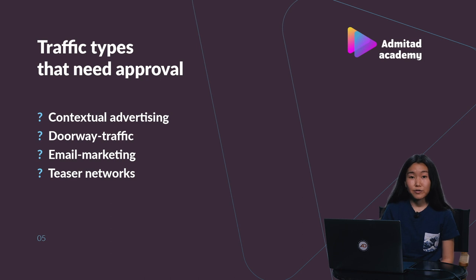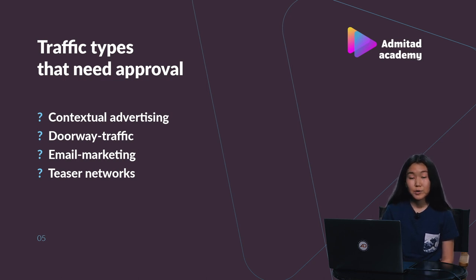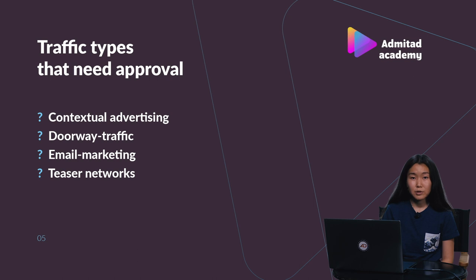Types of traffic that require approval are contextual advertising, doorway, email marketing, and teaser networks. You can request approval either before or right after you apply for the program. You can do it through the ticket system or through your personal manager if you have one. We recommend you do it as soon as possible because otherwise your application can be declined.